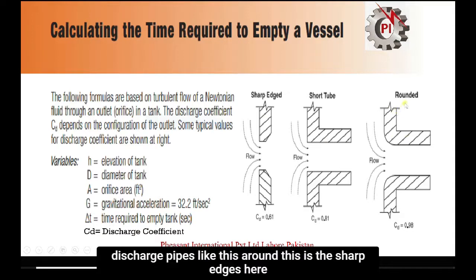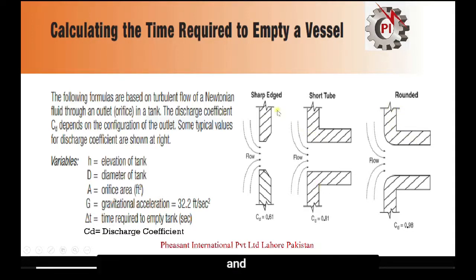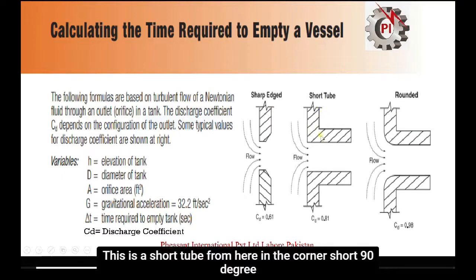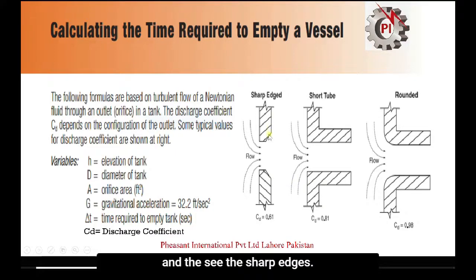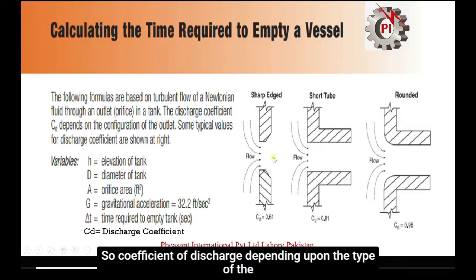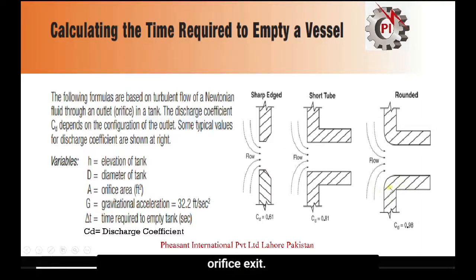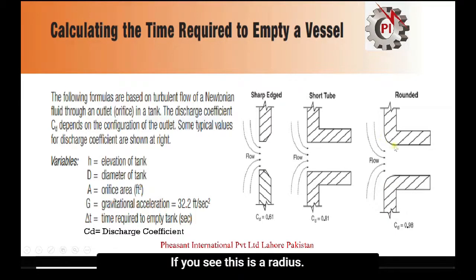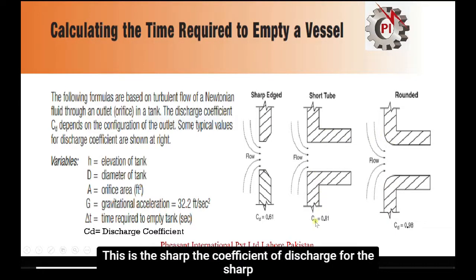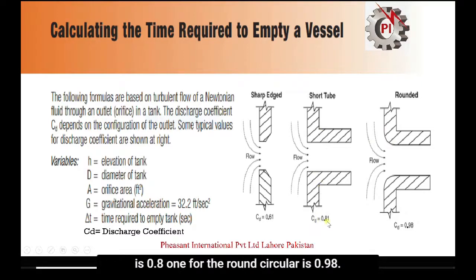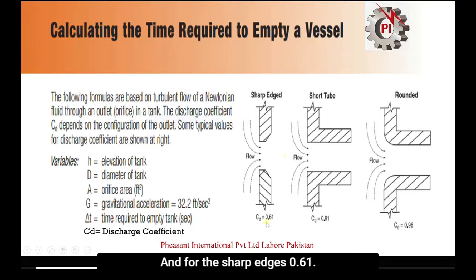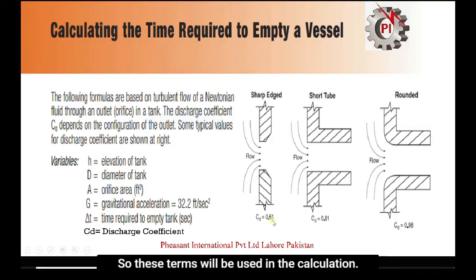CD is the discharge coefficient. There are many types of discharge pipes — a round sharp-edged orifice, a short tube with a sharp 90-degree corner, and a sharp-edged exit. The coefficient of discharge for the short tube is 0.81, for the round circular it is 0.98, and for the sharp-edged orifice it is 0.61.